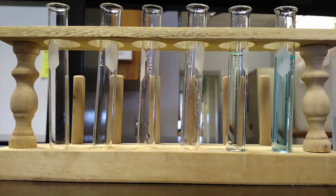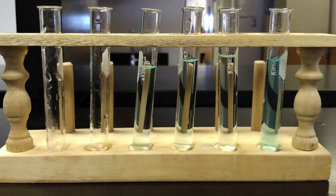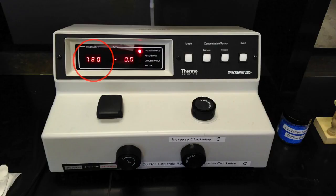Fill each of the 5 test tubes about 2 thirds of the way full with the 4 different solutions and the unknown solution. Turn on the spectrophotometer and set the wavelength to 780 nm.